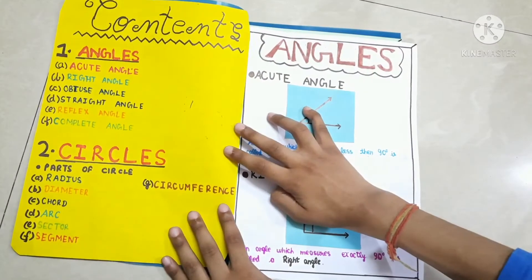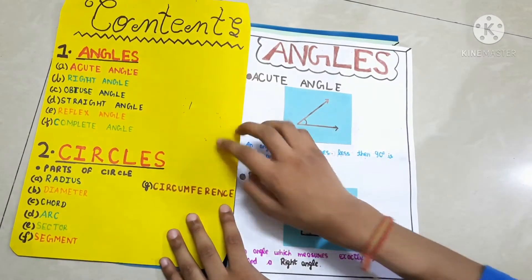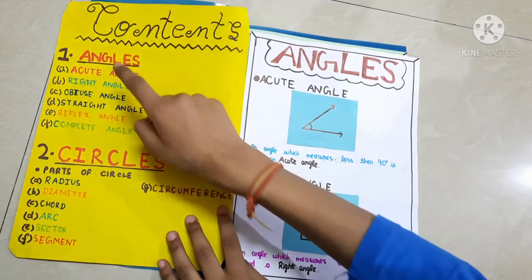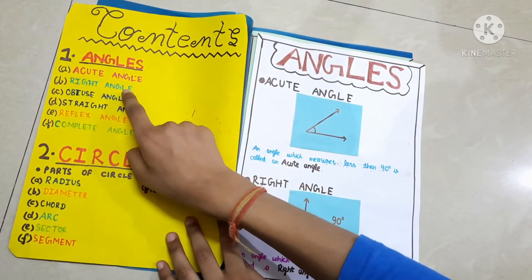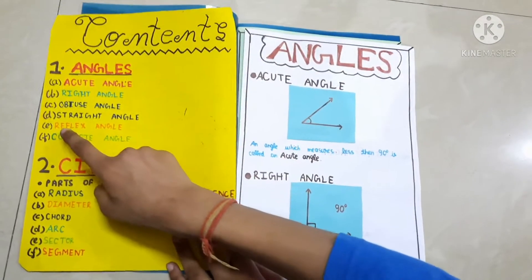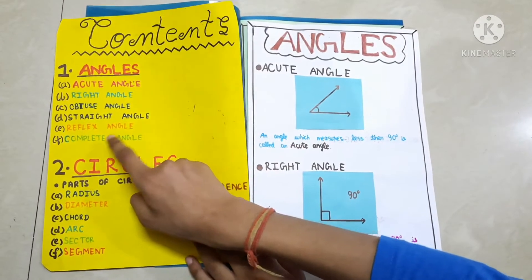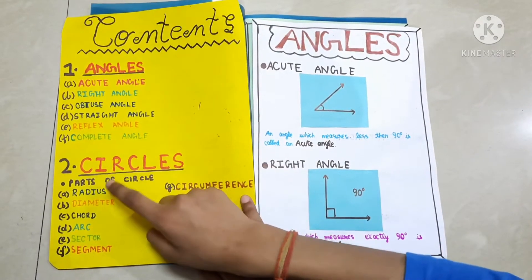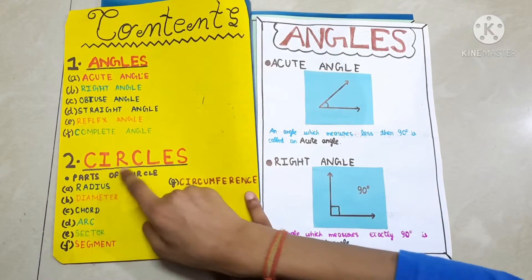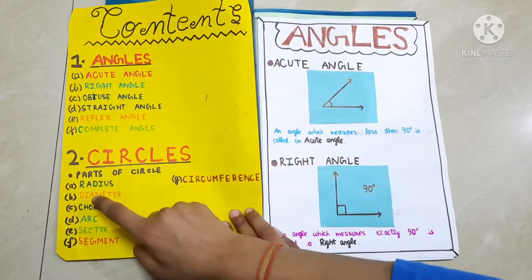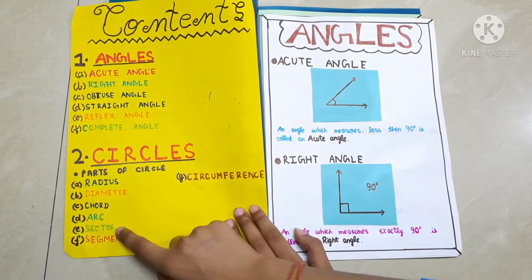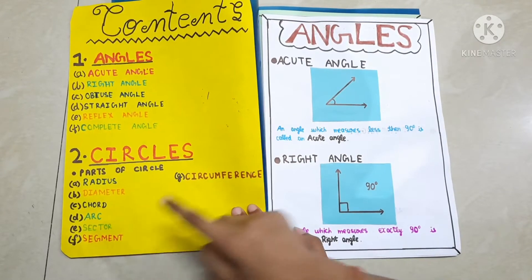These are the contents. First: Angles — A) acute angle, B) right angle, C) obtuse angle, D) straight angle, E) reflex angle, F) complete angle. Second: Circles — parts of a circle: A) radius, B) diameter, C) chord, D) arc, E) sector, F) segment, and G) circumference.